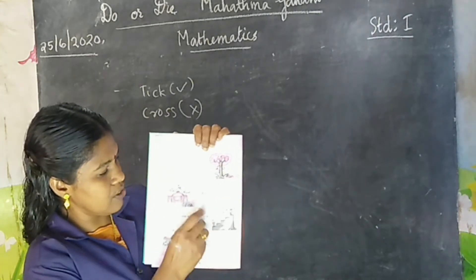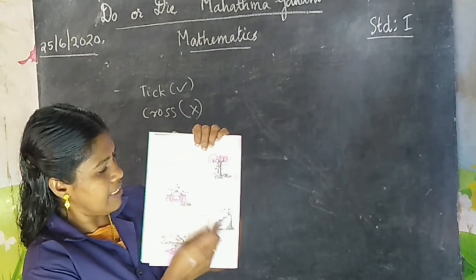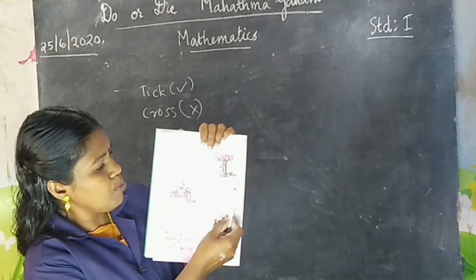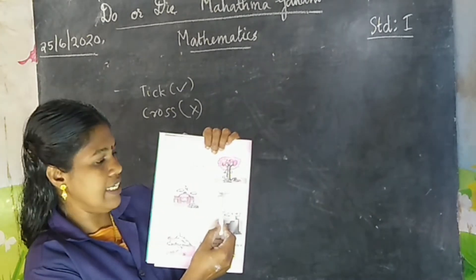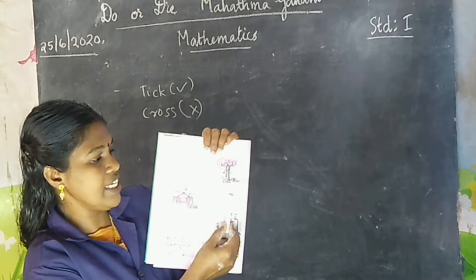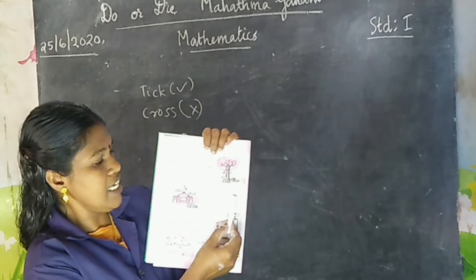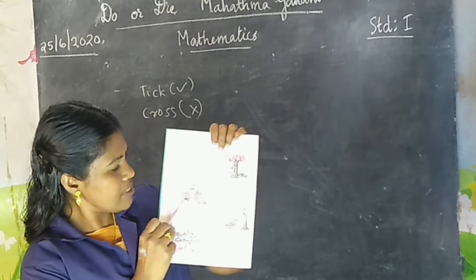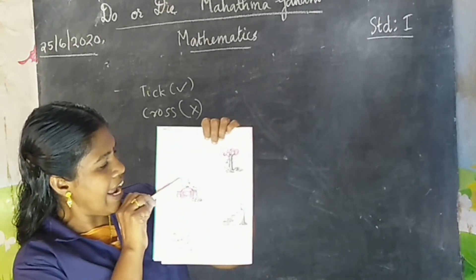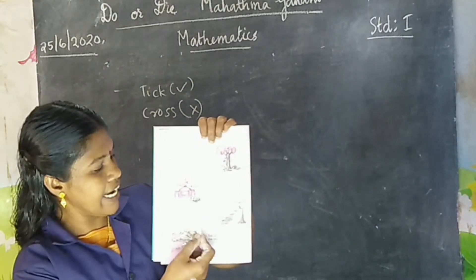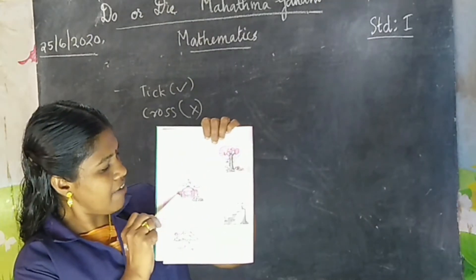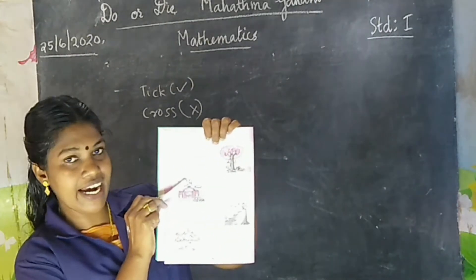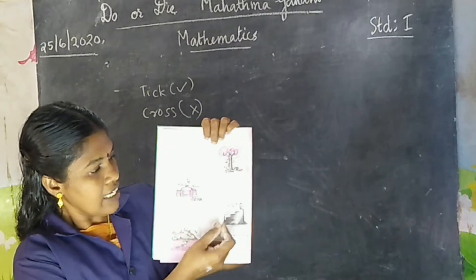We go to next question. Second question. Take the object on the top of the house. Here we have a house, a flag, and a car.